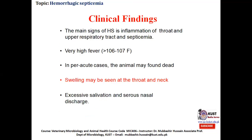Now we come to the clinical findings. The most important clinical sign of this disease is the inflammation of the throat and upper respiratory tract, followed by septicemia and death. Because Pasteurella multocida lives in the respiratory tract, it results in inflammation of that area. If the infection spreads to the blood, it results in septicemia and ultimately death if not treated on time. Other important clinical signs include very high fever. In peracute cases, the animal may be found dead without showing any specific clinical signs or symptoms.